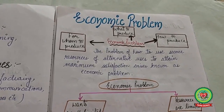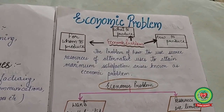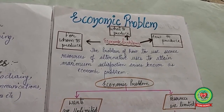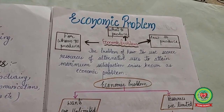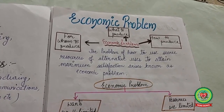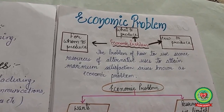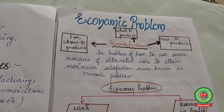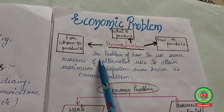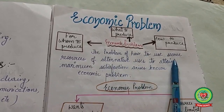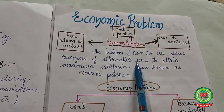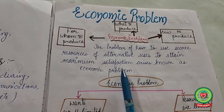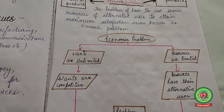Our topic is the economic problem. For example, a farmer has land he can use for cultivation of wheat, cotton, or vegetables. He has to make a choice between these alternative uses. The economic problem is essentially a problem of choice — how to use scarce resources of alternative uses to attain maximum satisfaction.